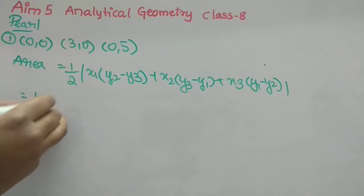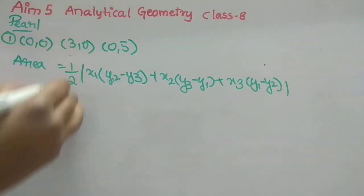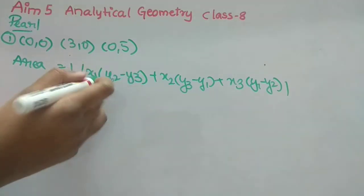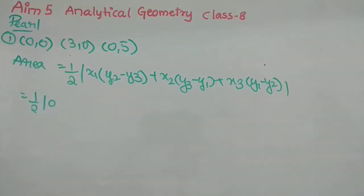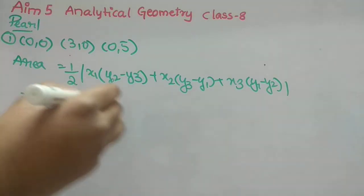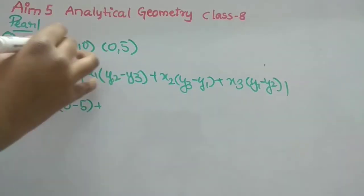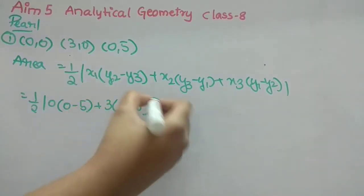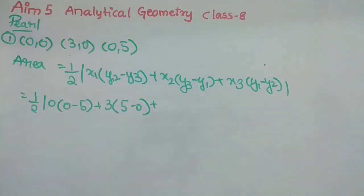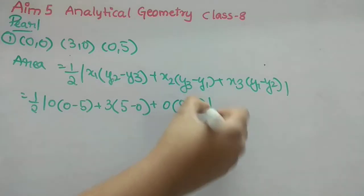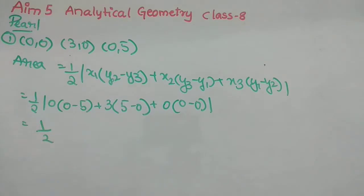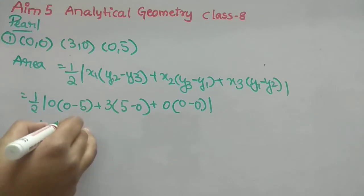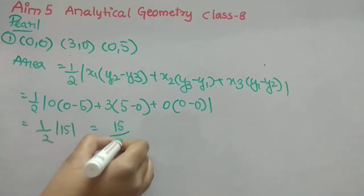Since x1 is 0, the first term becomes 0. The second term: x2 is 3, and y3 minus y1 is 5 minus 0 = 5, so 3 into 5 is 15. The third term: x3 is 0, so it's 0. Therefore area = half of 15 = 15/2 square units.